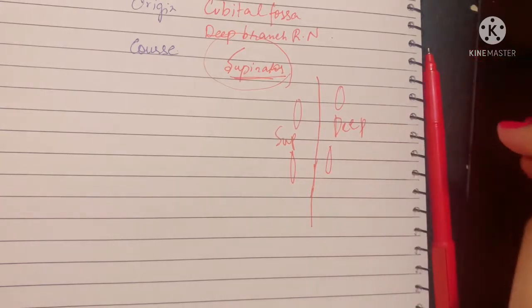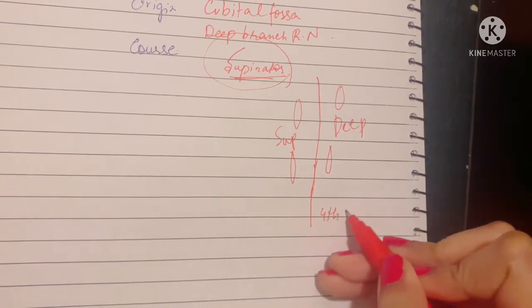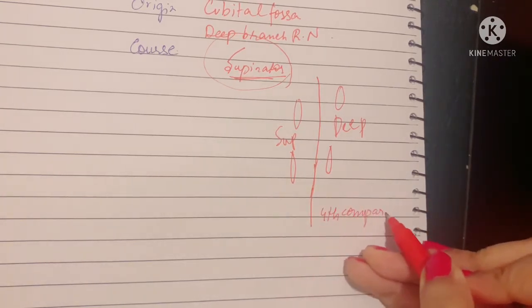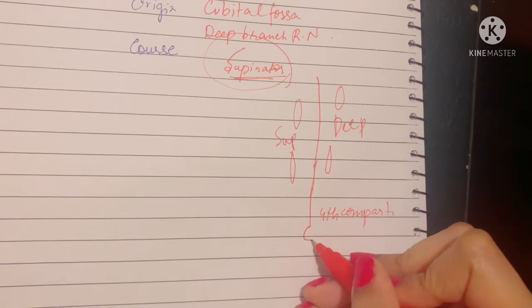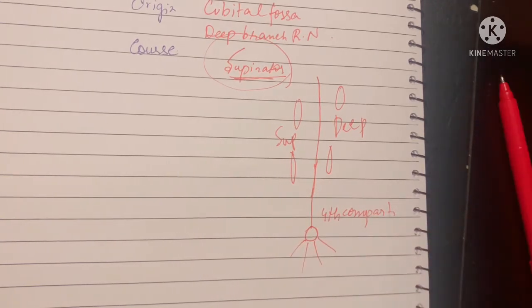Finally, it enters the extensor retinaculum. If you remember, in the fourth compartment of the extensor retinaculum, it enters where it becomes a pseudoganglion and gives its branches to supply the hand.